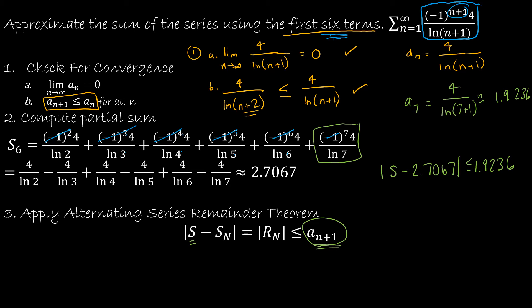The alternating series remainder theorem says that this inequality is true. So now I just have to break out my algebra skills and say, well, this is an absolute value inequality. And if it's an absolute value inequality that is less than, which is always going to be the case for this alternating series remainder theorem, I can rewrite this as negative 1.9236 is less than or equal to S minus 2.7067 is less than or equal to positive 1.9236. And therefore, I can write it as a compound inequality in this way.